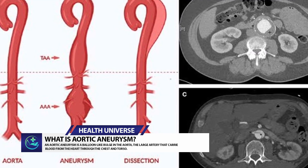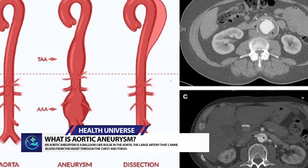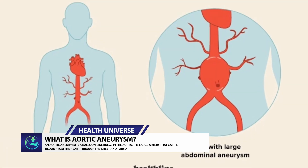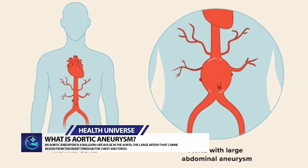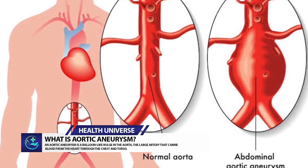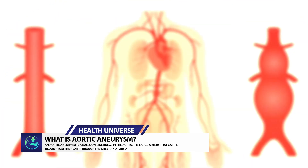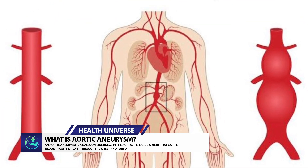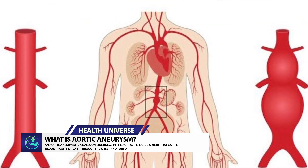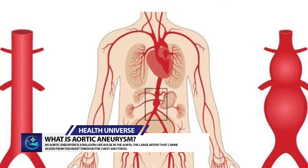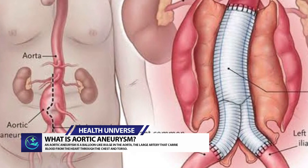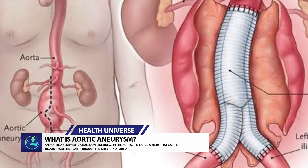The aneurysm can burst completely, causing bleeding inside the body. This is called a rupture. Dissections and ruptures are the cause of most deaths from aortic aneurysms.